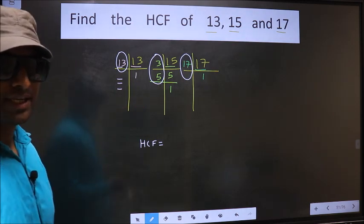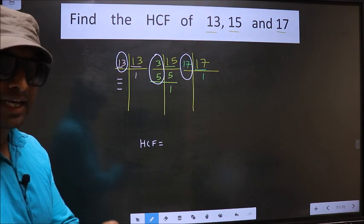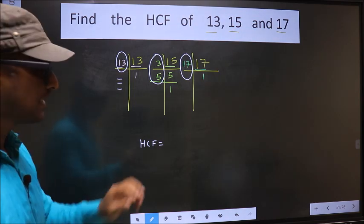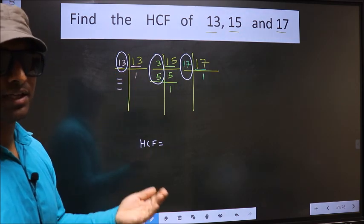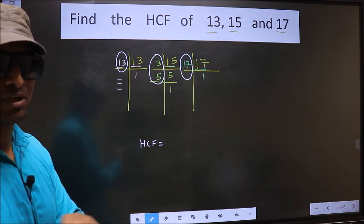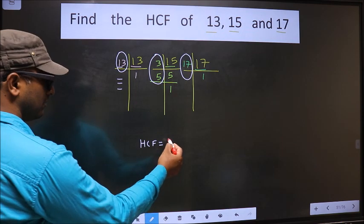Therefore, conclusion is we do not have any number present in all the three places. In these situations, you should always take HCF to be 1.